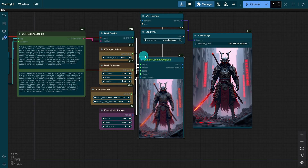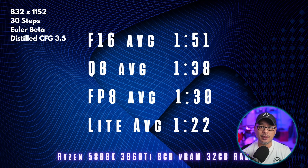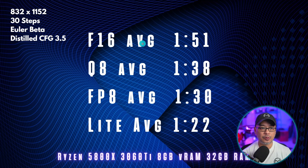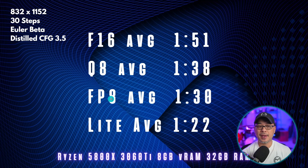It's pretty straightforward, and whatever Flux workflow you're working with, you can definitely adapt it for this model. On my 3060 Ti, the average generation time for the full model was 1 minute 51 seconds, and the 8B Lite model came in at 1 minute 22 seconds. So it is faster compared to the F16, Q8, and FP8. In that regard, they are achieving what they set out to do.